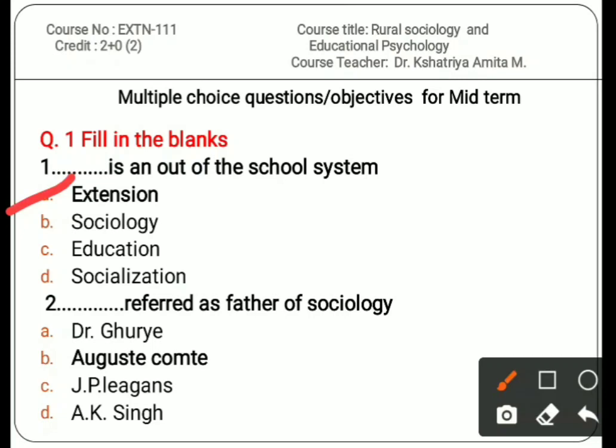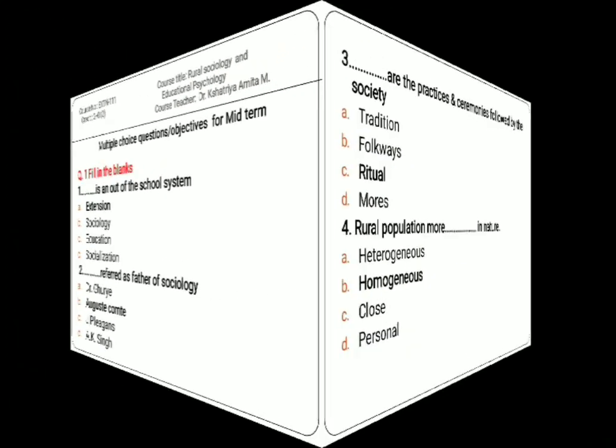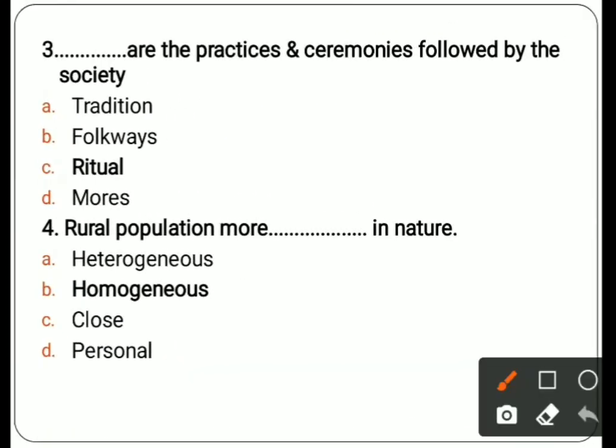Next question: dash dash is referred to as the father of sociology. Options are Dr. Ghurye, Auguste Comte, J.P. Ligands, A. Casing. The correct answer is Auguste Comte — he is referred to as the father of sociology.